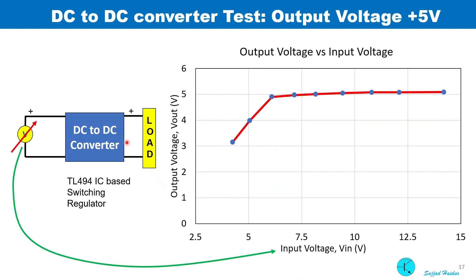Before using the switching regulator with the generator, it was tested with a variable power supply. The input voltage was varied from 4 to 15 volts and output voltage was measured. As you can see, the output voltage remains almost flat at 5 volts.